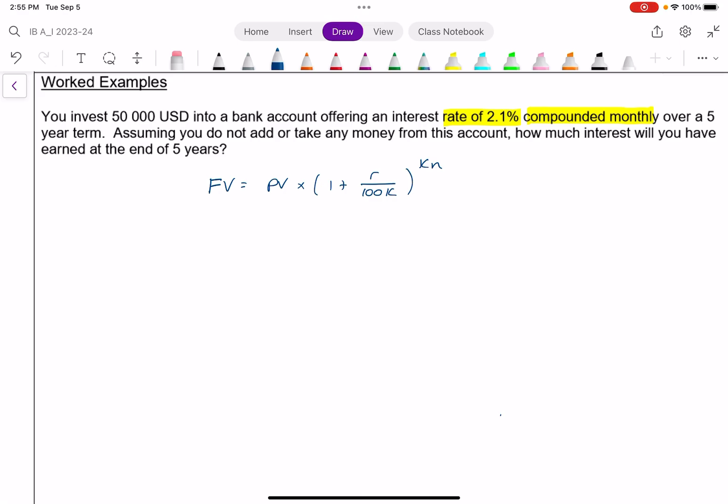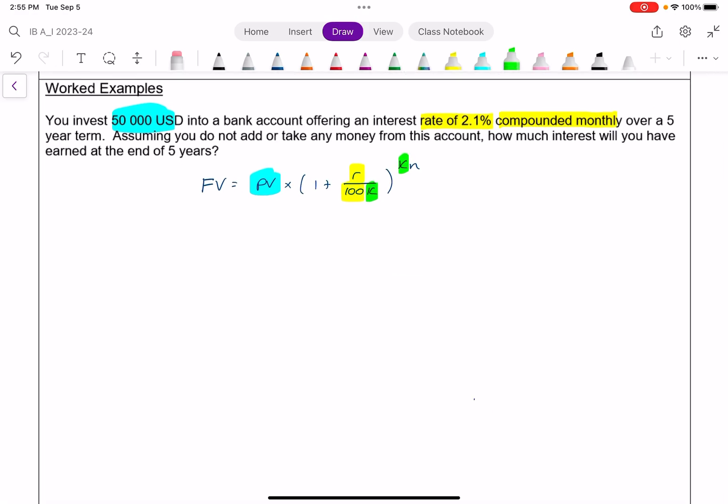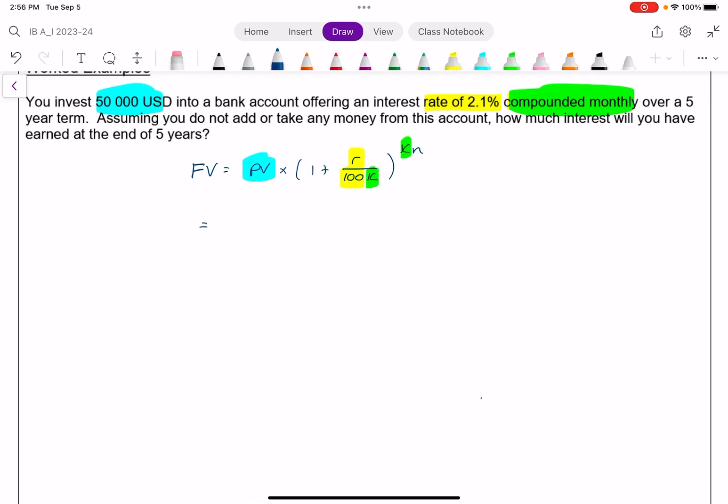And so in this case, we know pretty much everything we need to do this quite quickly. The present amount is 50,000. The rate is 2.1%, which keep in mind that divided by 100 just means percent. So it's 2.1 divided by 100. And K, the compounding periods, is the fact that it's monthly. So that's going to be 12. And so I can write this. The future value will be 50,000 times 1 plus the rate, 2.1 divided by 100 times the number of compounding periods, 12 times a year, all to the power of 12 times the number of years.